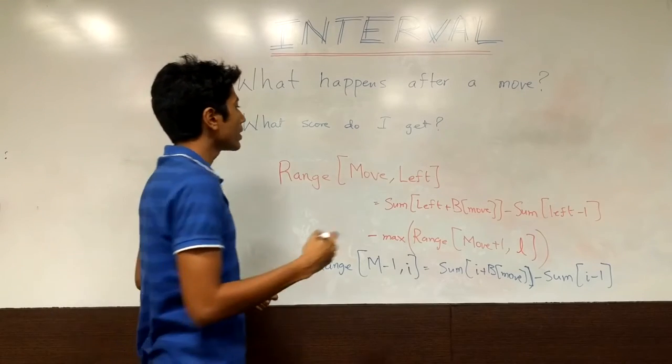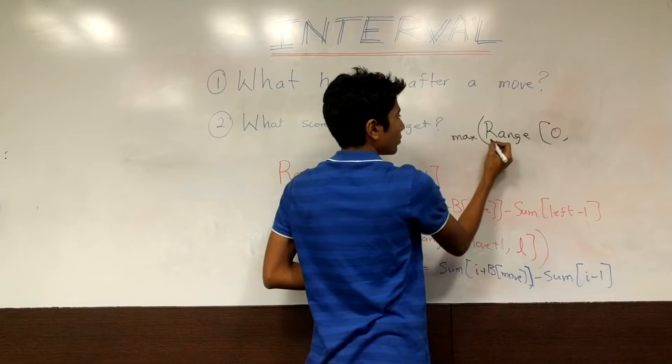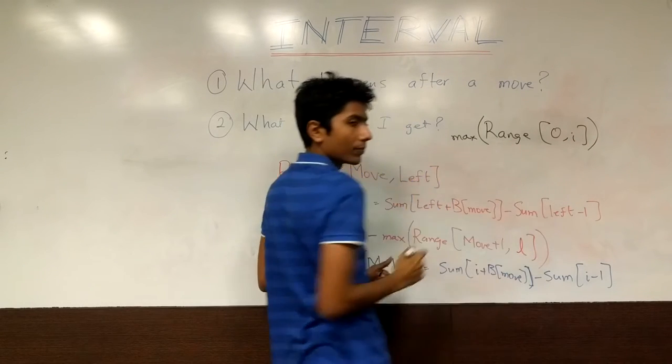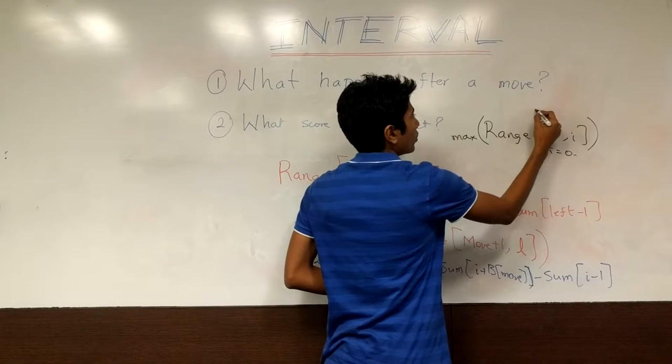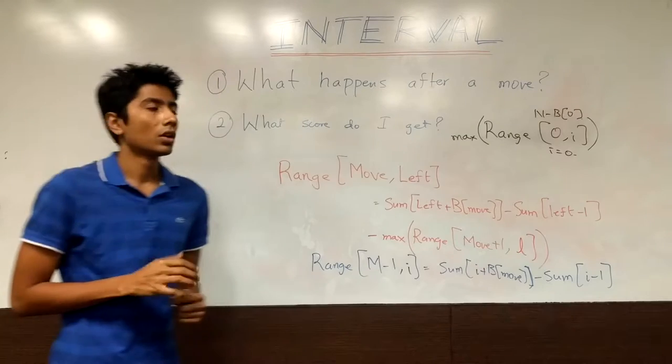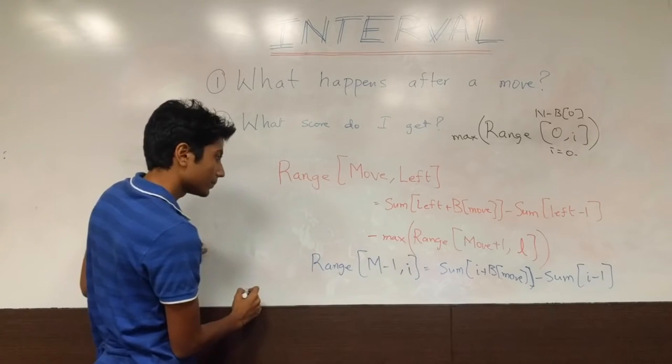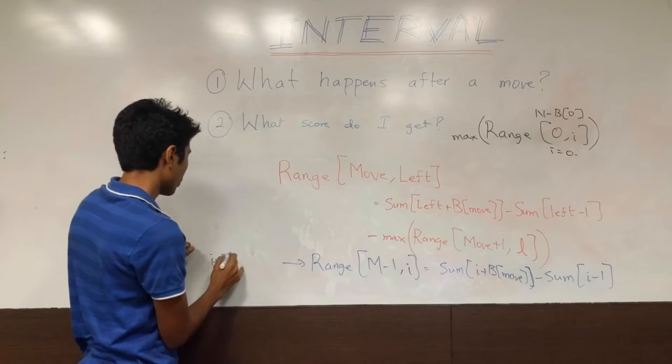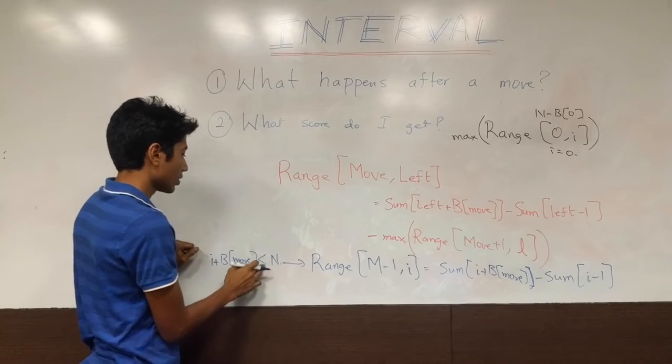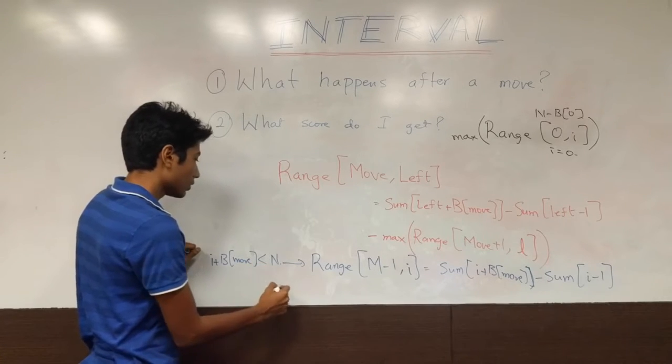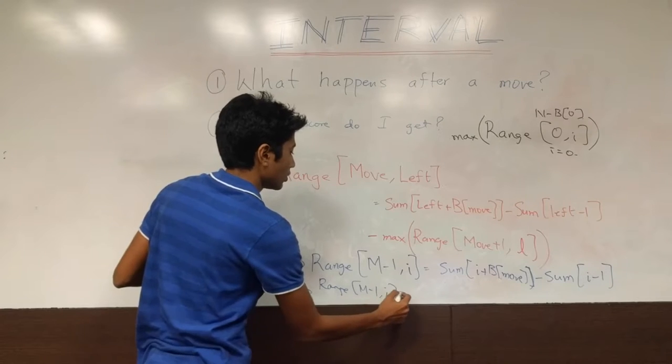So this is what the general case is, and your base condition is when you're on the last move, you just take the sum of all elements between right and left. Right is defined by i plus b. Alright, and your final answer will be given by a range of move number 0, the maximum possible in move number 0 for all i. For all lefts possible. So in fact that is equal to i equal to 0, and up to n minus b. And if i plus b of move is greater than n, so if this is when i plus b of move is less than equal to n, that's when we play this. Otherwise, this range is equal to 0.